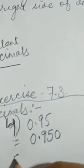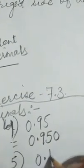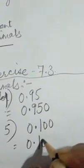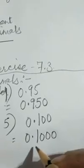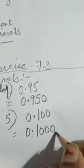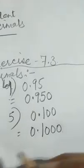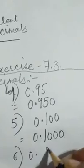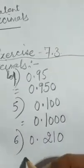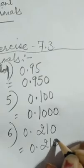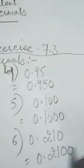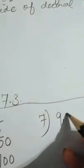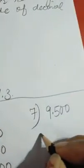In the same way, sum number 5 is 0.100. If we put one more zero on the extreme right of the decimal, we get the equivalent: 0.1000. Next, sum number 6 is 0.210 — its equivalent will be 0.2100.